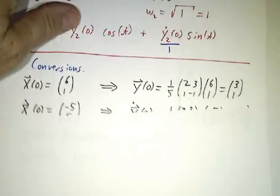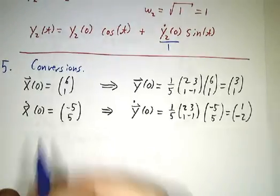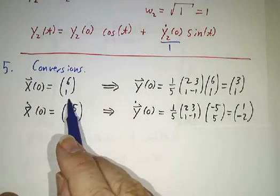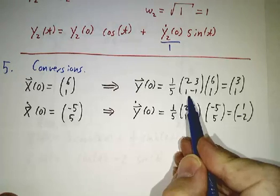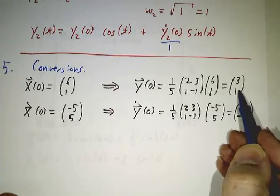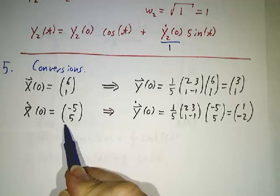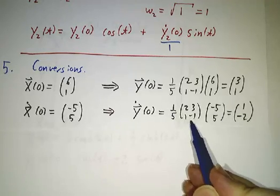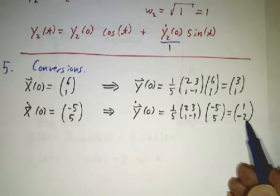And now we convert. We take our initial value, and we multiply by P inverse, and we get the initial value for y. We take the initial velocity for x, we multiply by P inverse, and we get the initial value of y dot.